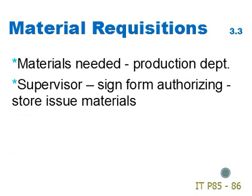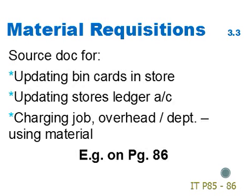A material requisition is completed when materials are needed from the production department. A supervisor from production will sign the form, authorizing it, then the store will issue the materials when they receive the material requisition. Material requisitions are used as a source document for updating the bin cards in the store, updating the store's ledger account in the costing department, and charging the job, overhead, or department that is using the material. For an example of a material requisition, see page 86 of your interactive text study guide.